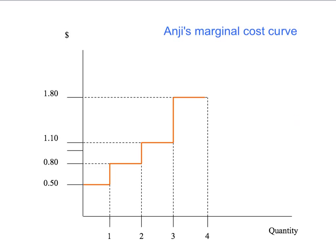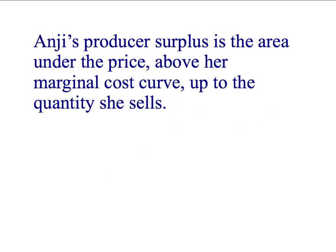We've been looking at the example of Anji, who starts off with four apples. We've seen that the key to understanding Anji's gain from trade is to look at her marginal opportunity cost curve, which we've drawn here. Anji's producer surplus from any trade is the area under the price, above her marginal cost curve, up to the quantity of apples that she sells.